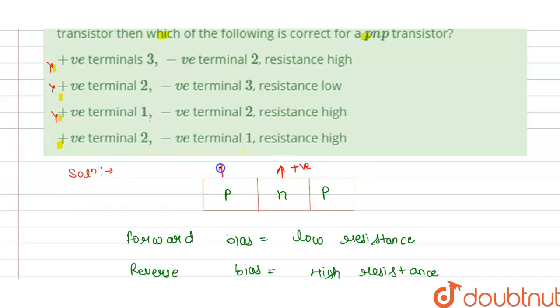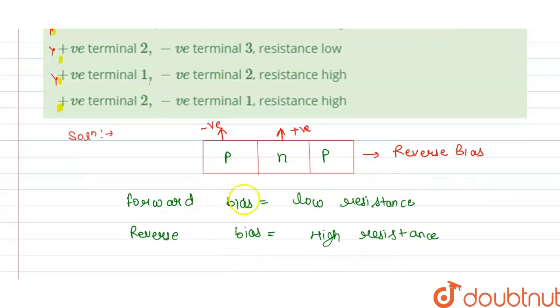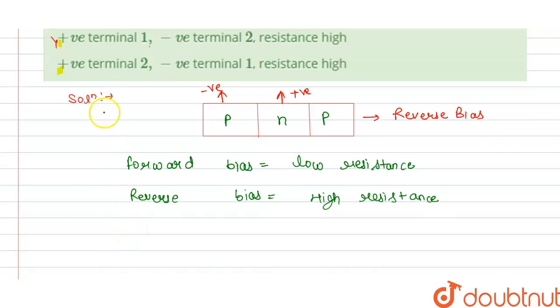So it is the condition for reverse bias, and in the case of reverse bias we have the resistance is high. So from this we can say that our option D is correct for this question.